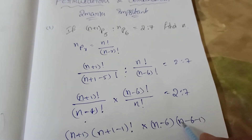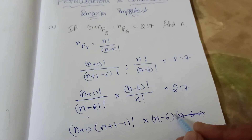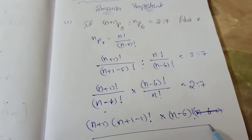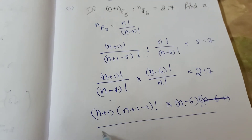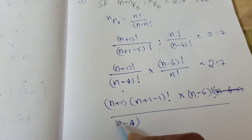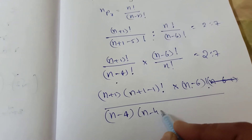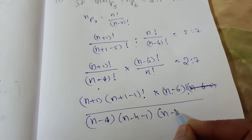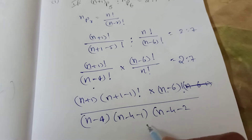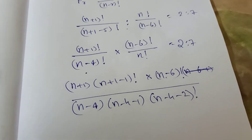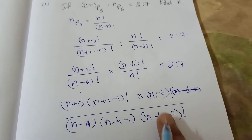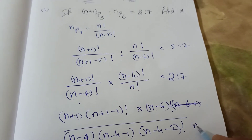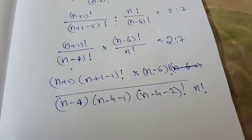Instead, expand (n minus 4) factorial as (n minus 4) times (n minus 5) times (n minus 6) factorial. Now (n minus 6) factorial cancels from both numerator and denominator. Good.